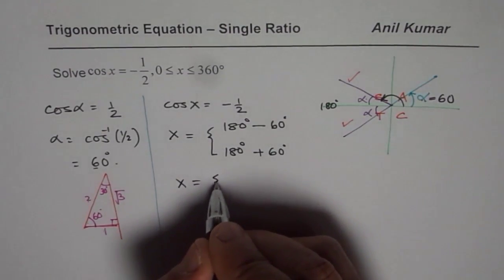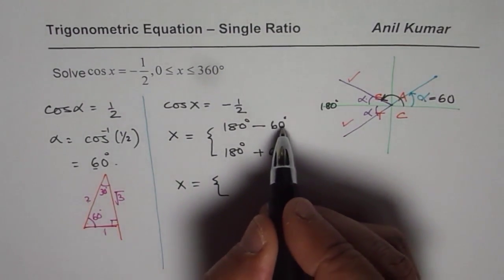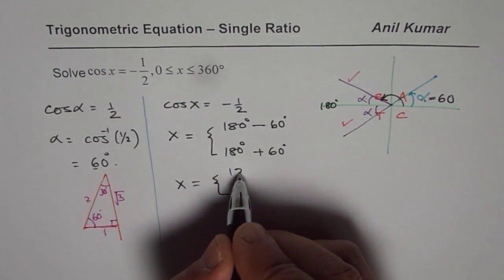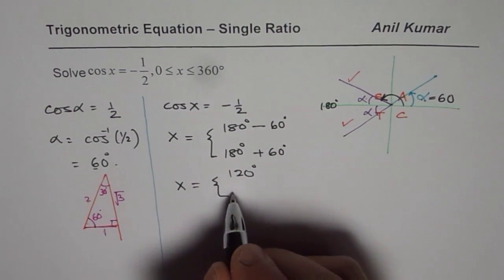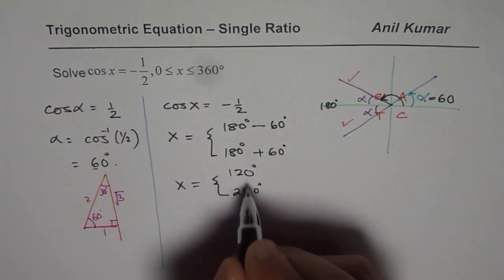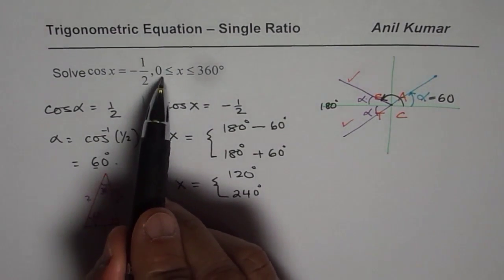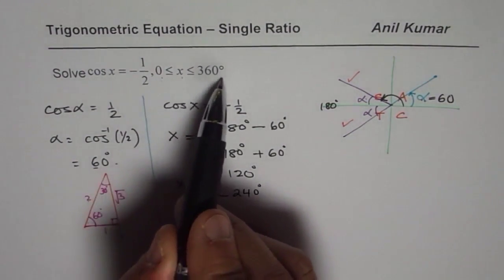And therefore you say x equals 180 minus 60. You can use the calculator, write down your answers. And 180 plus 60, which is 240 degrees.